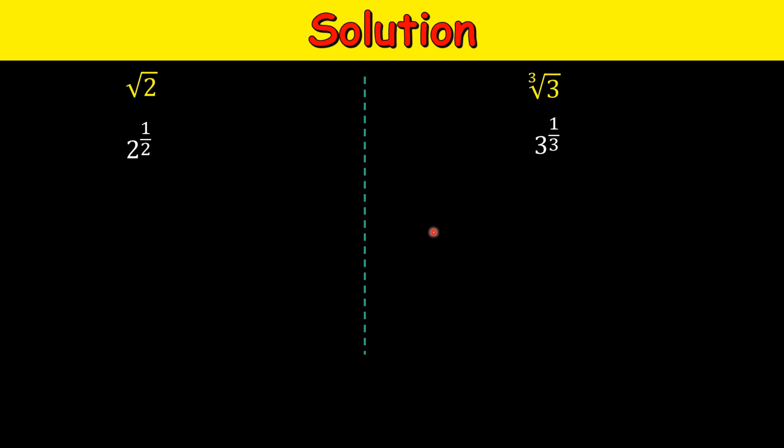Again, this half can be written as 3 multiplied by 1 by 6, and this 1 by 3 can be written as 2 multiplied by 1 by 6. So we are just changing the power here; the base remains the same. And this can be written as 3 raised to the power of 2 multiplied by 1 over 6.